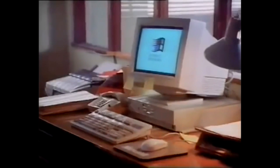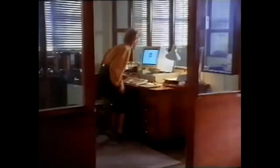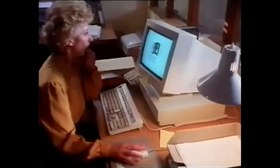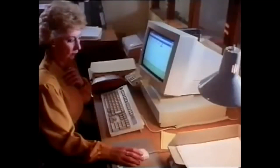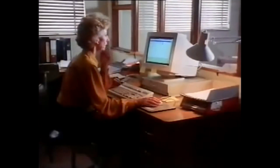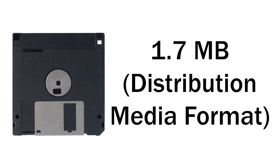In 1994, Microsoft began using a new format they had developed for floppy disks, known as the Distribution Media Format, or DMF. It allowed ordinary 3.5 inch floppies to hold 1,689 KB of data, versus the 1,440 KB of a standard floppy.